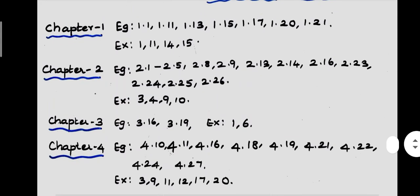Next, Chapter 2. Examples: 2.1 to 2.5, which means 2.1, 2.2, 2.3, 2.4, and 2.5. In this example, in the second chapter, we expect a 2-mark problem.